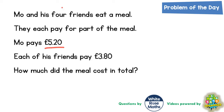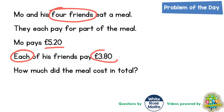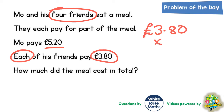The first thing to realise is that Mo has got four friends and they're each paying £3.80. A lot of these problems involve more than one step and we're not going to be able to solve this in one step — they're going to involve column methods. So because he's got four friends each paying £3.80, that is going to be £3.80 multiplied by four.